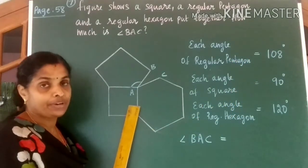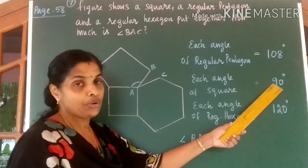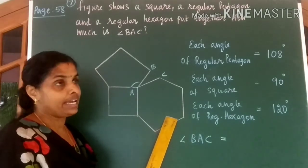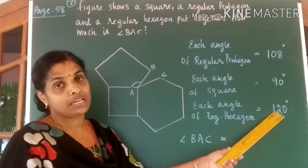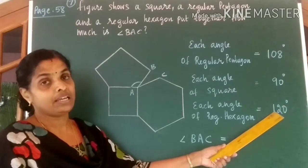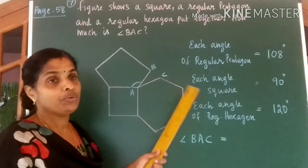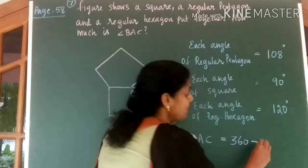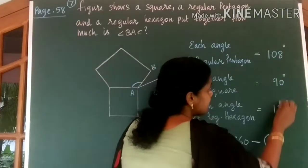So what is each angle of a square? 360 divided by 4 which gives you 90. Each angle of a regular hexagon, 720 divided by 6 gives you 120 degrees. So to get angle BAC what we have to do from 360 degrees we have to subtract the sum of these 3 angles.